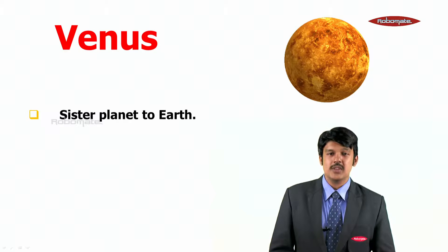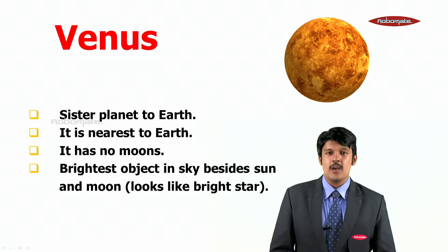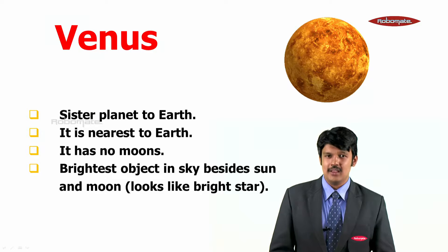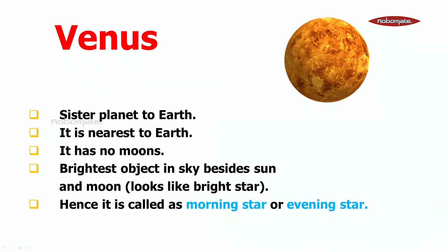The next is Venus, the second planet. It is the sister planet to Earth because it is nearest to the Earth. It has no moons. Venus is the brightest object in the sky besides the sun and moon — it looks like a bright star. It is called the morning star or evening star. It rotates from east to west.